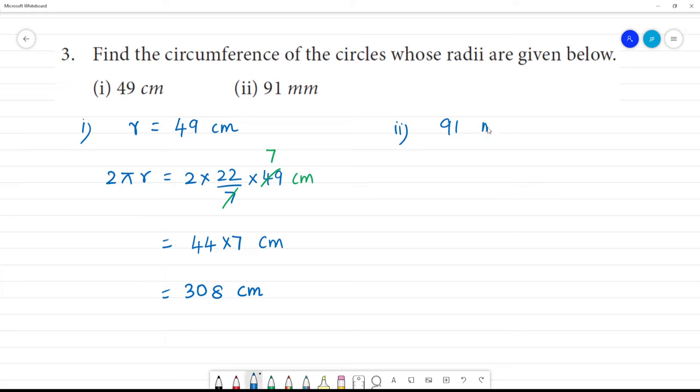Radius is 91 millimeter. 2πr is equal to 2 × 22/7 multiplied by 91 millimeter.